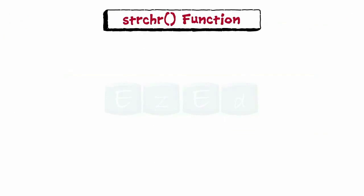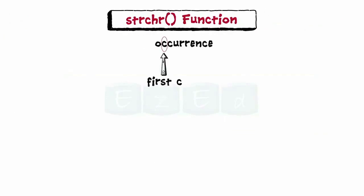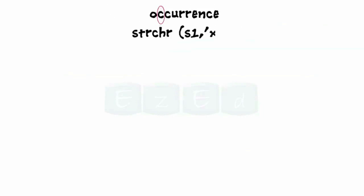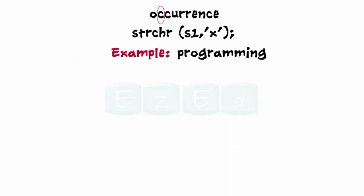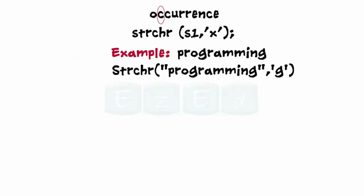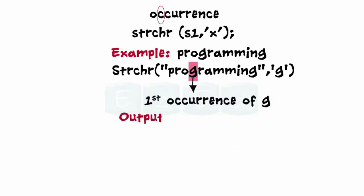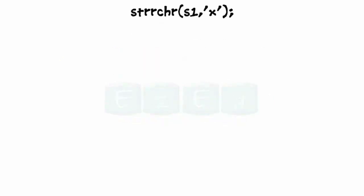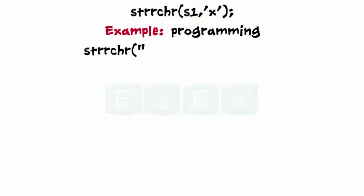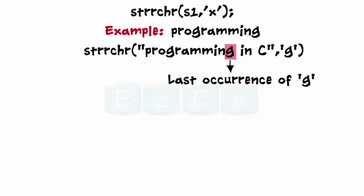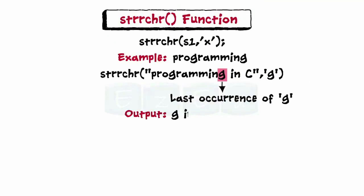Next we learn strchr, which is used to find the occurrence of a character in a string. For example, consider the string 'programming' — using strchr will locate the first occurrence of 'G' in the string s1. There is also strrchr, which locates the last occurrence of a character in a string. Using strrchr will locate the last occurrence of 'G' in s1, and its output will be shown accordingly.